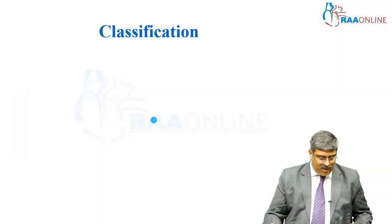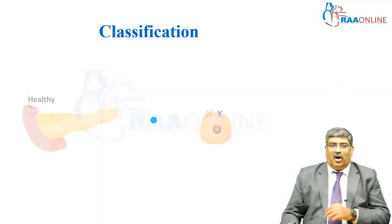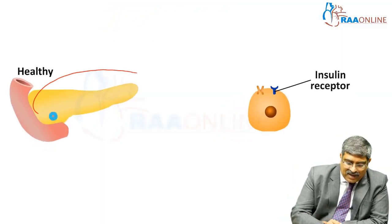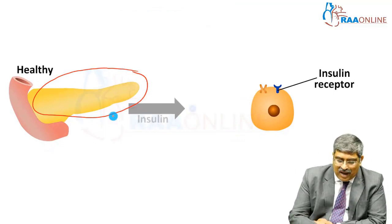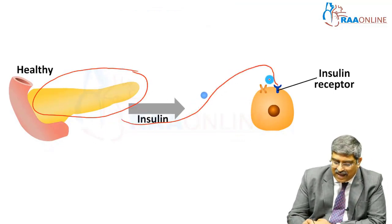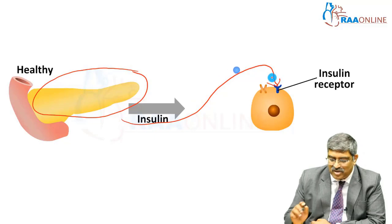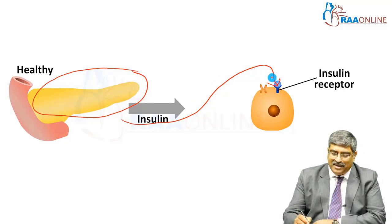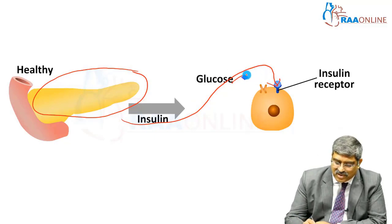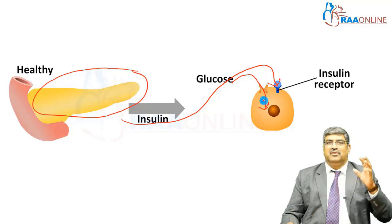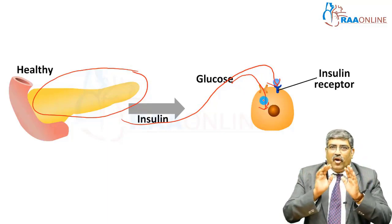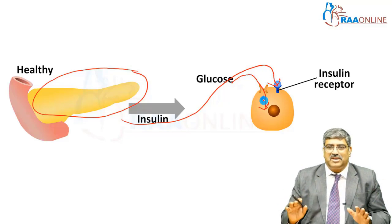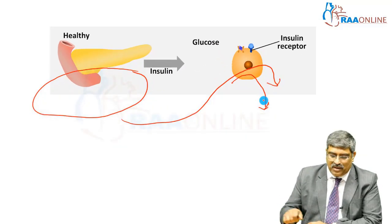Coming to the pathophysiology: normally, the pancreas secretes insulin, and this insulin acts on the insulin receptor, whereby glucose from outside is transported inside the cell for utilization. This is the normal glucose metabolism which happens with secretion of insulin.